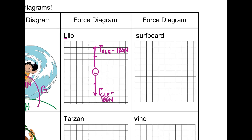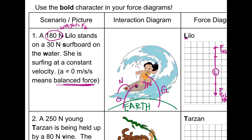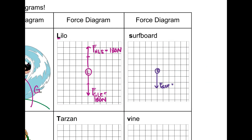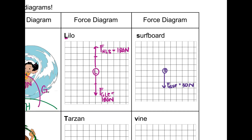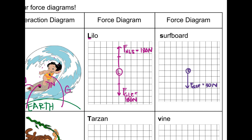Now for the surfboard, it might be a little different. The surfboard also has a force of gravity on the surfboard by the Earth, happening at 30 newtons — that is the force of gravity, or the weight. Weight is how much the Earth is interacting with you, and that's always just called weight. Now, Lilo is being pushed up by the surfboard, which we already have in Lilo's force diagram — and by Newton's Third Law, Lilo is pushing down on the surfboard.